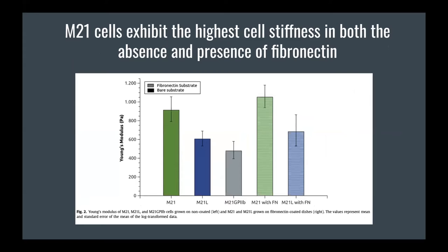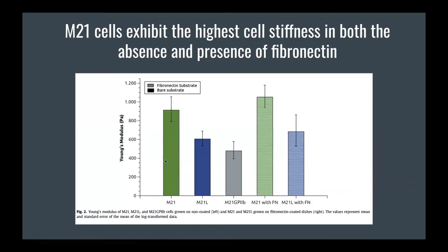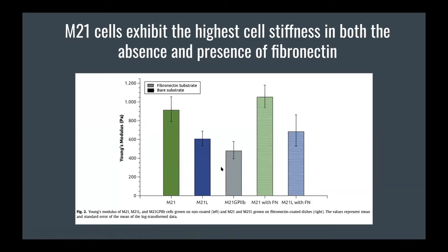In the next two graphics we start to get into the meat of this paper. The first shows a relationship between the alpha v beta 3 integrin and up-regulation of stiffness. The M21 cell with the specific integrin has the highest Young's modulus, meaning the most strain. When it is replaced with the alpha 2b GP2B beta 3, stiffness is down-regulated.